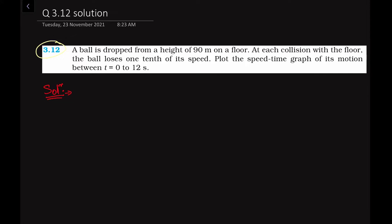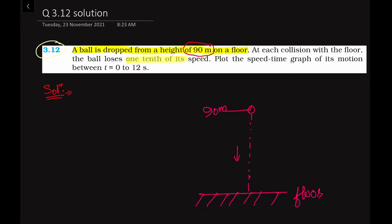In this problem, we are given that a ball is dropped from a height of 90 meters onto a floor. At each collision on the floor, the ball loses one tenth of its speed. So the next important point is that it loses one tenth of its speed.